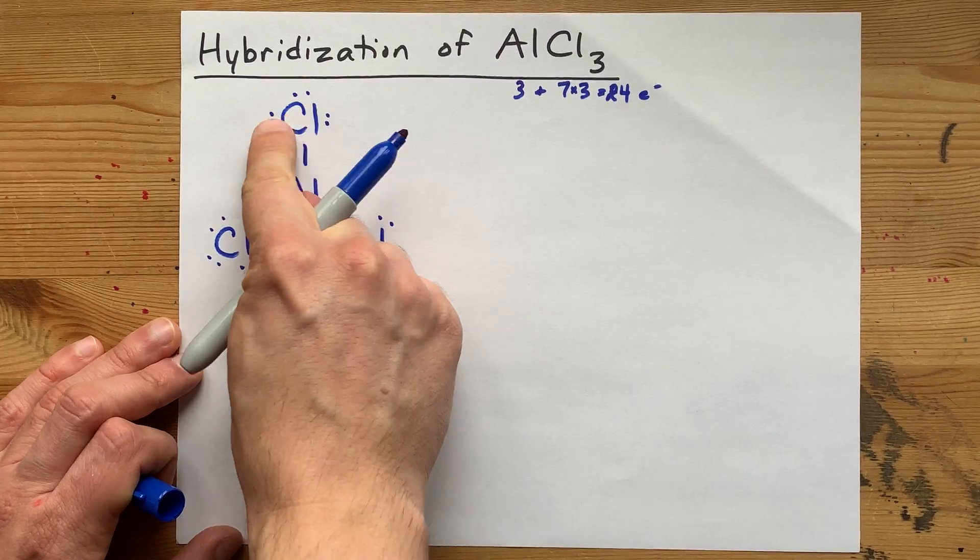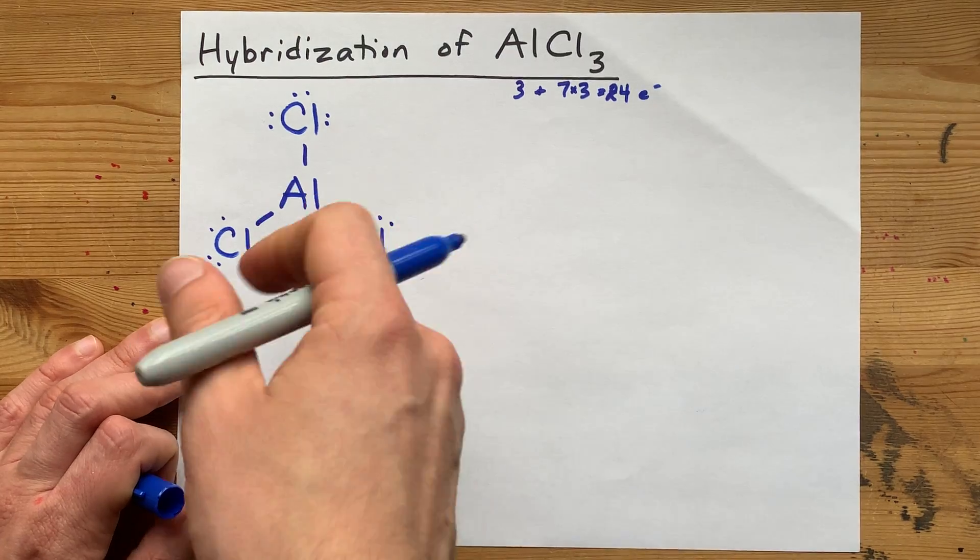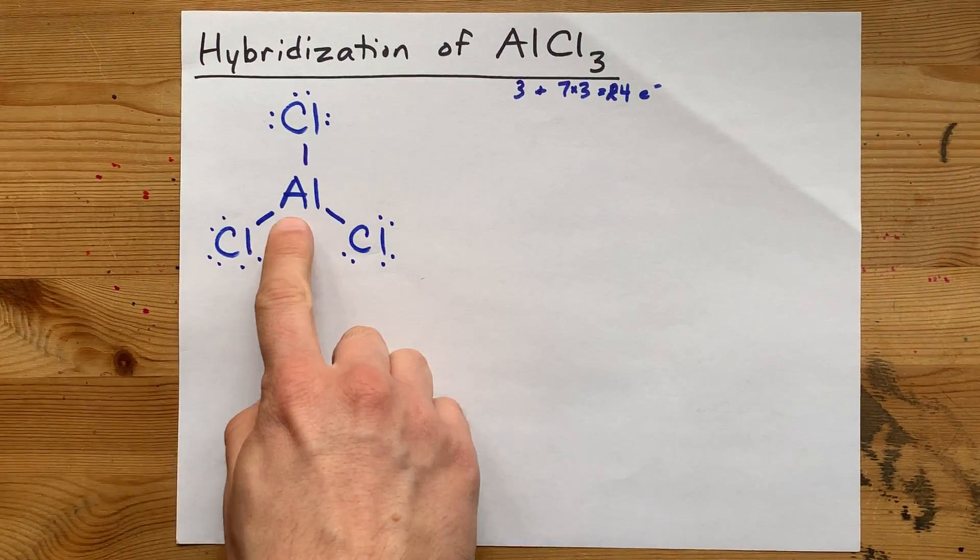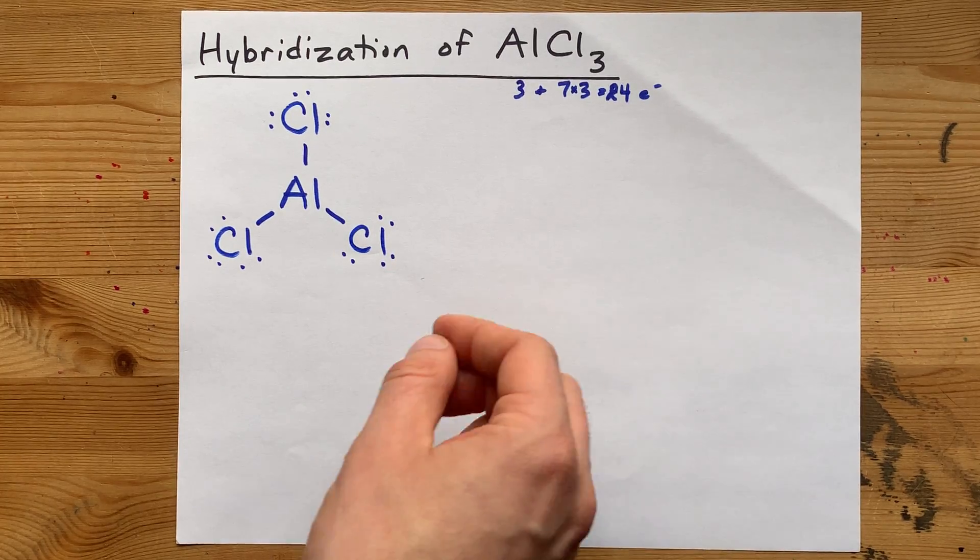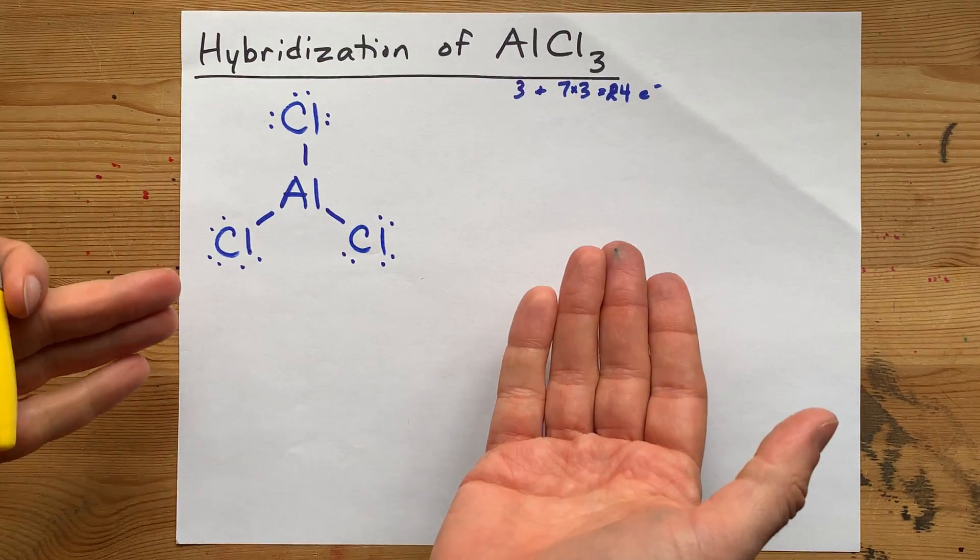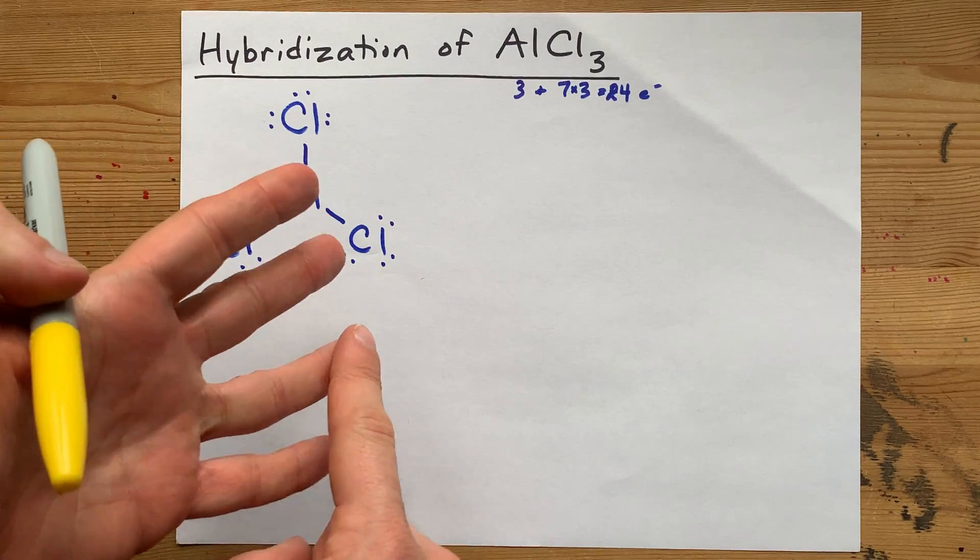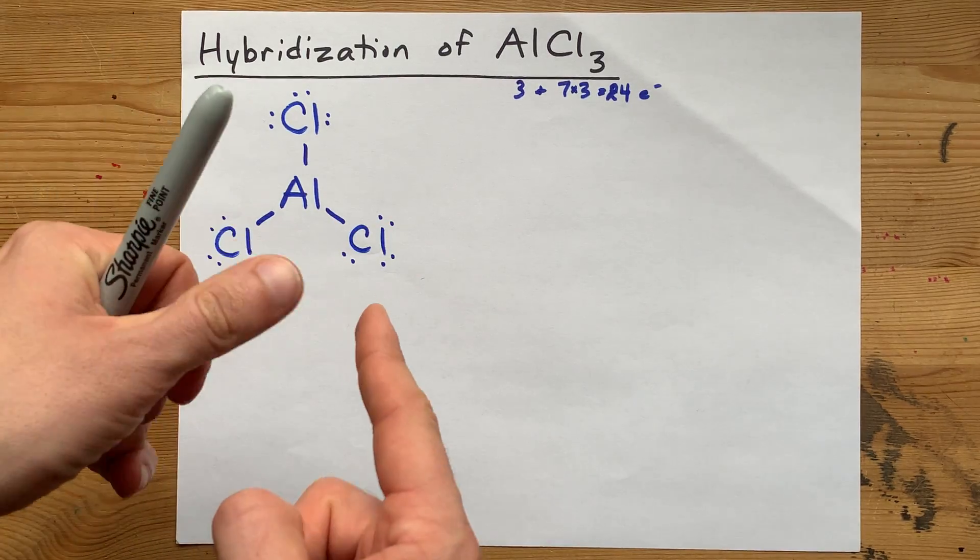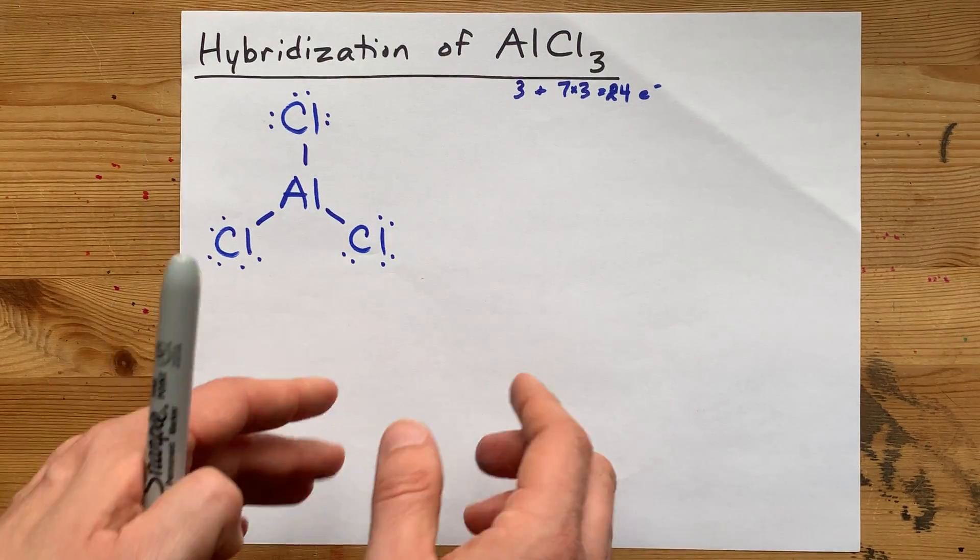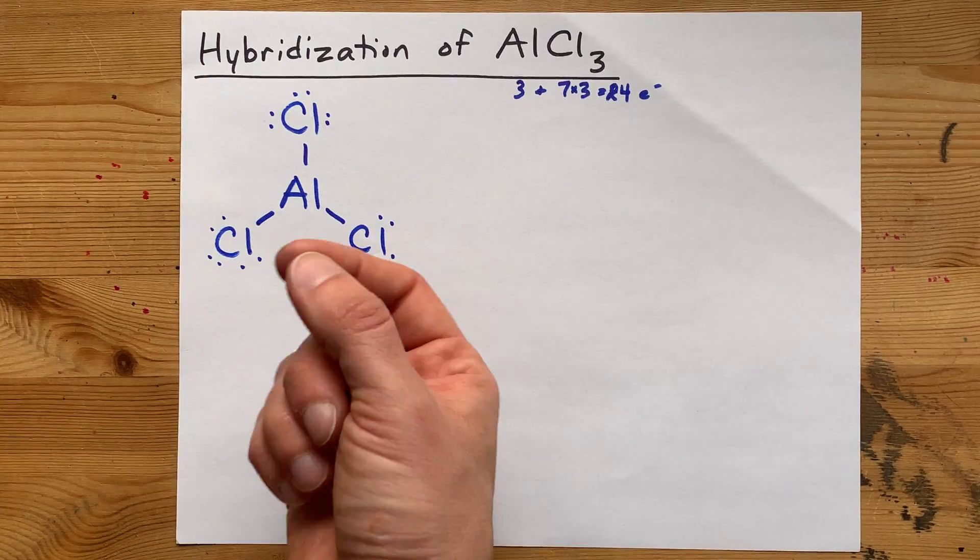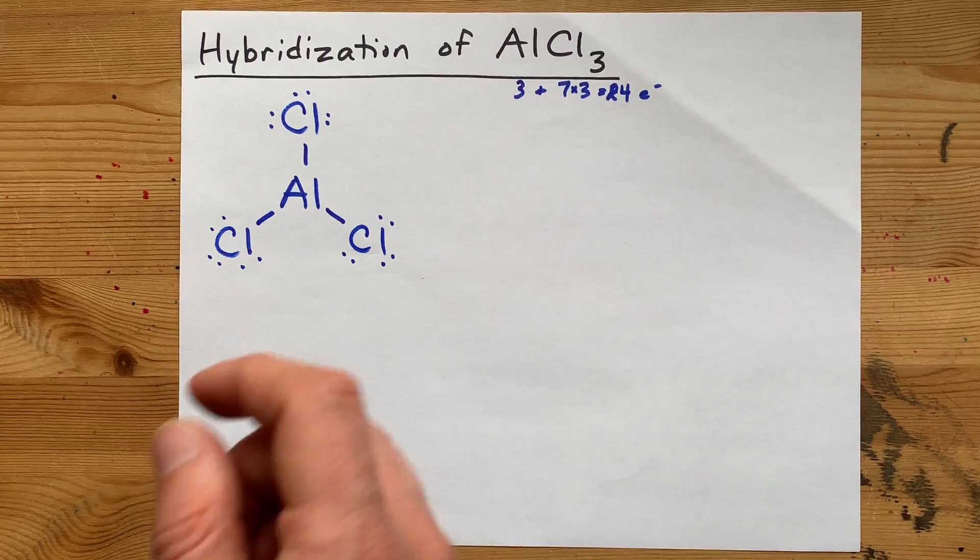All of my chlorines have a full octet, and so I'm done. Aluminum does not need a full octet. It is an exception to the octet rule. My personal rule of thumb is that only carbon, nitrogen, oxygen, fluorine, and silicon - those are the only five atoms that actually always follow the octet rule. Aluminum does not. This is a valid Lewis structure for aluminum chloride, even though aluminum doesn't have a full octet.